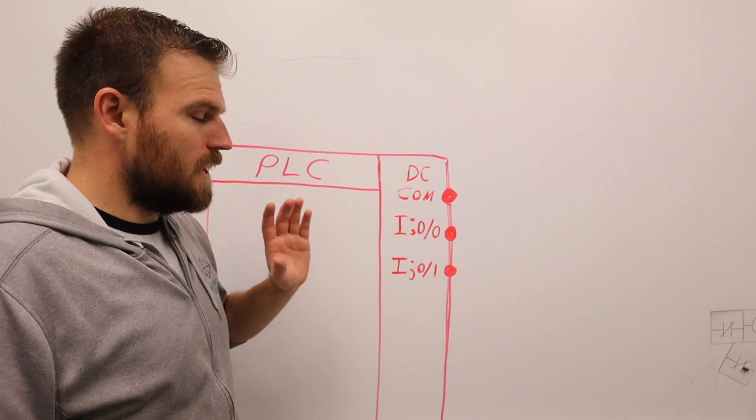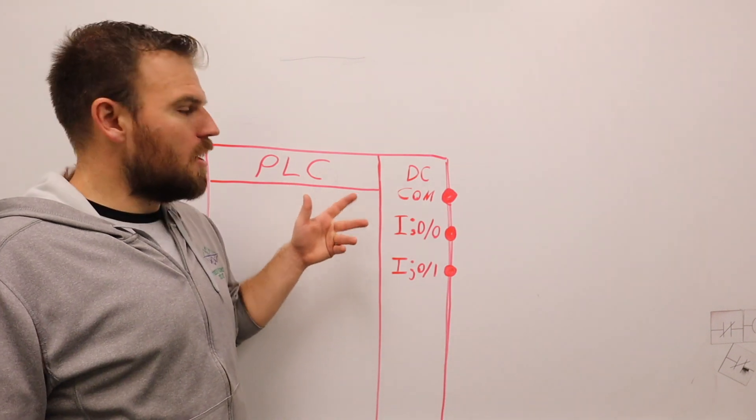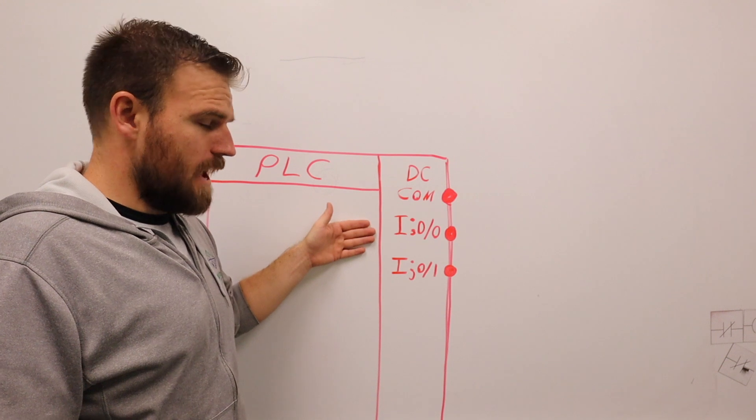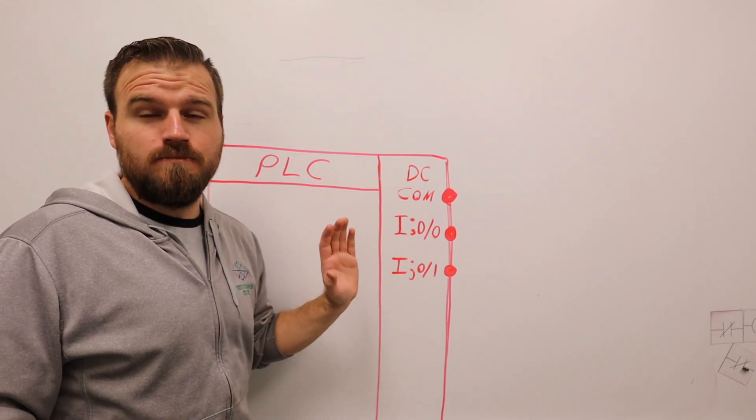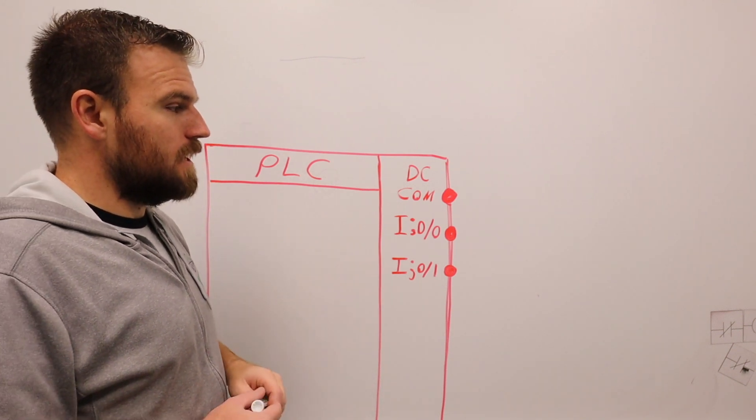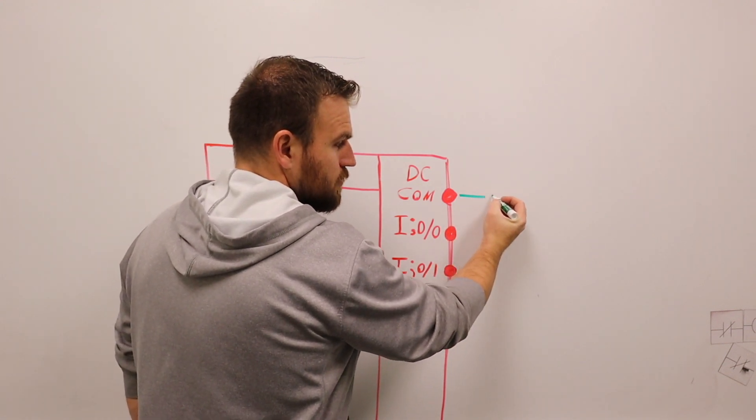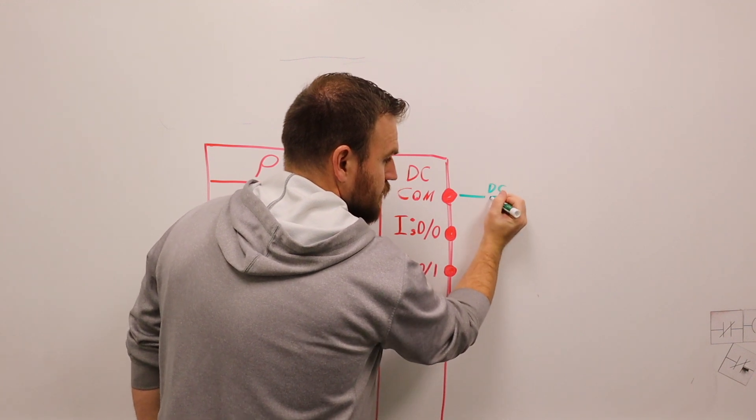But my oversimplification goes like this. There are two types of terminals on our PLC. There's going to be a DC common and then there's going to be the actual input terminals. And I've just drawn two of them. I believe our PLC has nine.